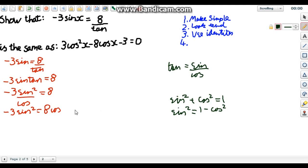We're going to put this in in place of this sine squared. So when we do that we get negative 3 times 1 minus cos squared is equal to 8 cos. We've changed something. So we go back to the start. We make it simple again.